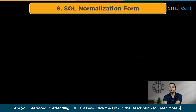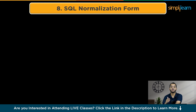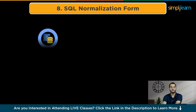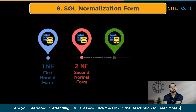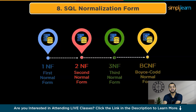The next step is to learn about SQL normalization forms. Normalization is organizing data in a database to reduce redundancy and improve integrity. There are several levels of normalization, each with specific rules: First Normal Form (1NF), Second Normal Form (2NF), Third Normal Form (3NF), and Boyce-Codd Normal Form (BCNF).